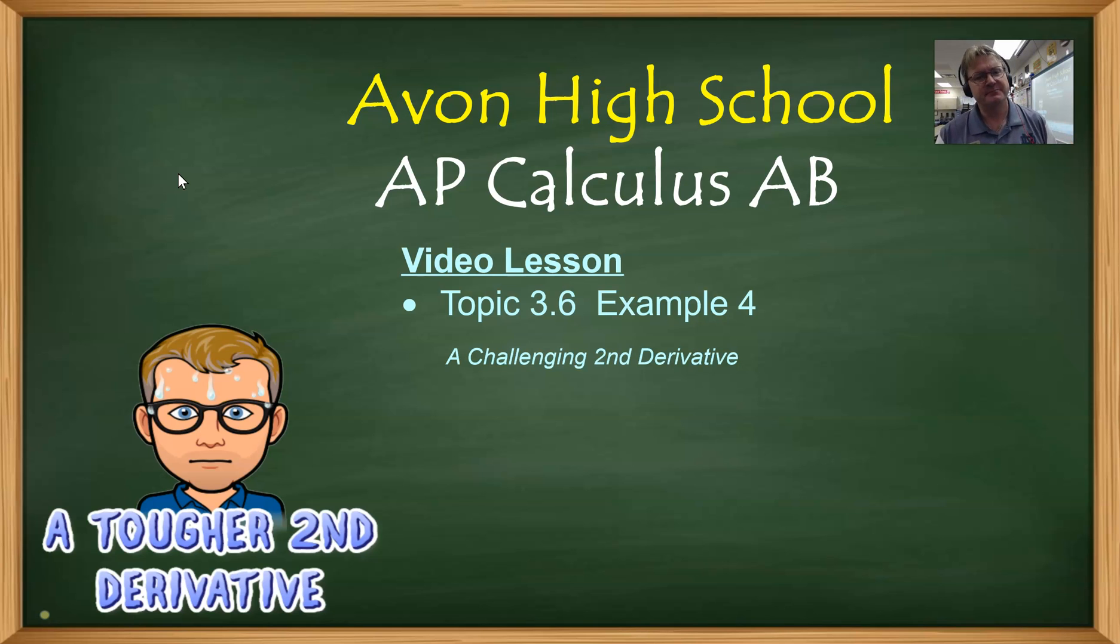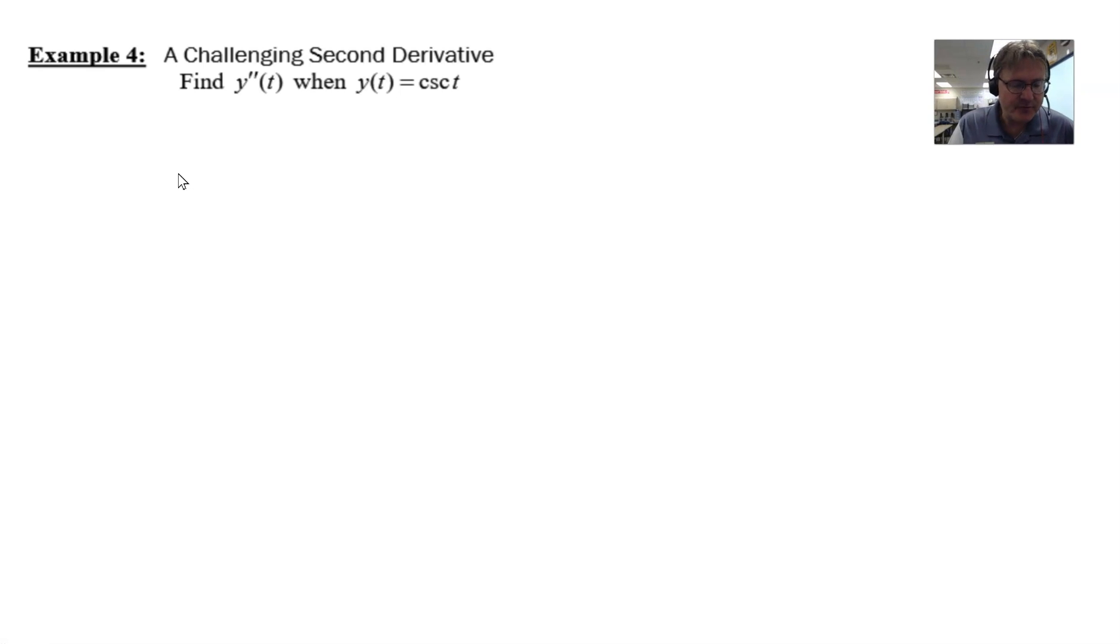It does involve a trig function, maybe not our favorite trig function. So let's go ahead and take a look at it. Our example 4 says find y double prime of t if y of t is defined to be cosecant of t.